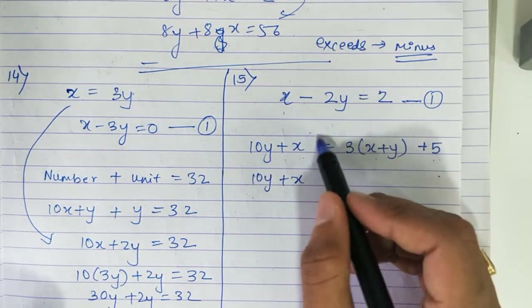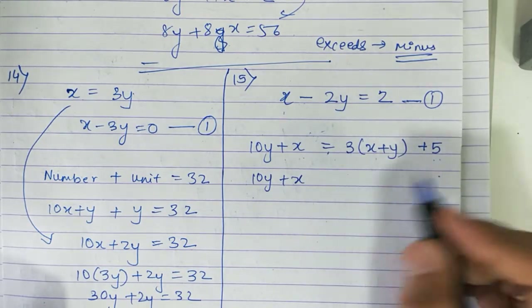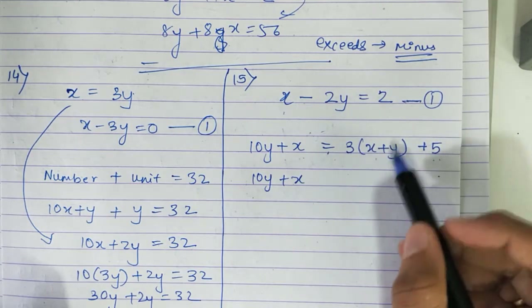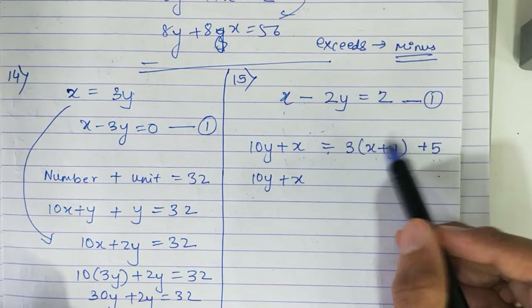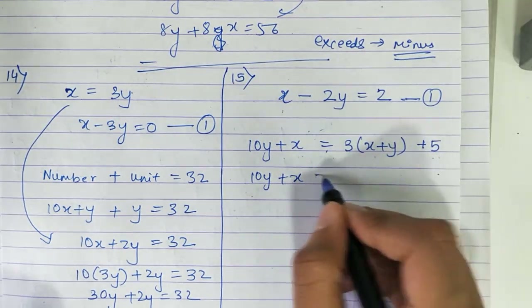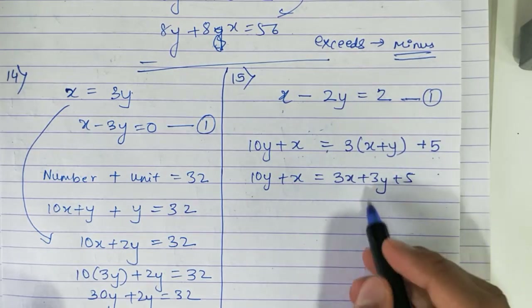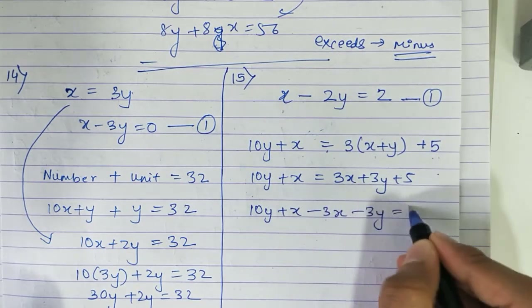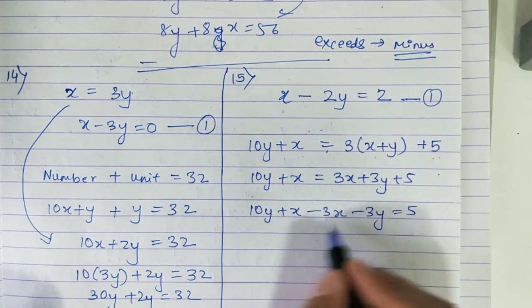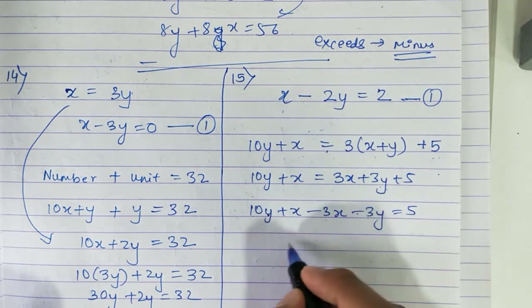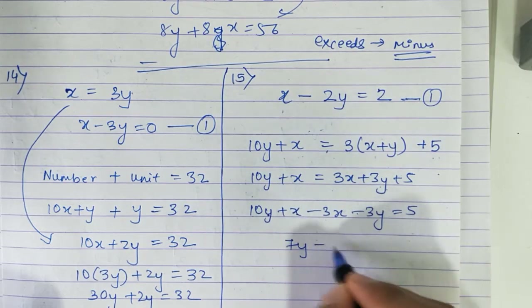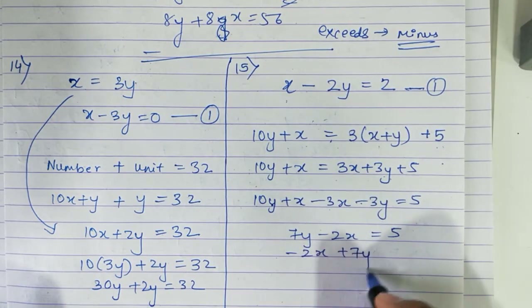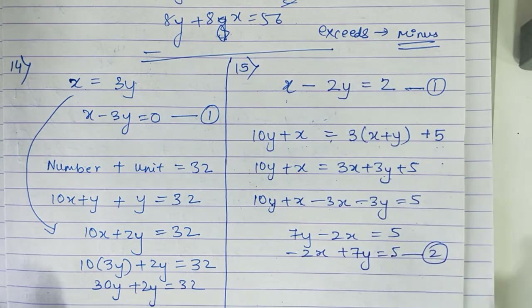Don't get confused — 5 more than means you add 5. Shifting terms: 10y minus 3y is 7y, x minus 3x is minus 2x, equals 5. Rearranging: minus 2x plus 7y equals 5. This is equation 2.